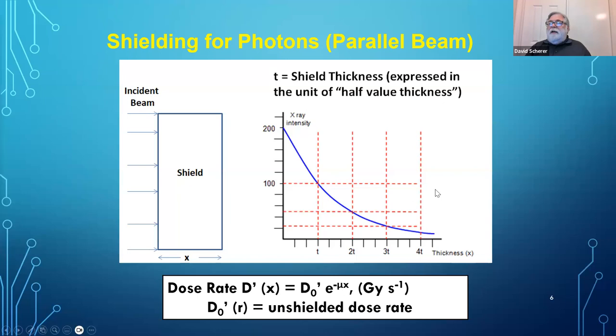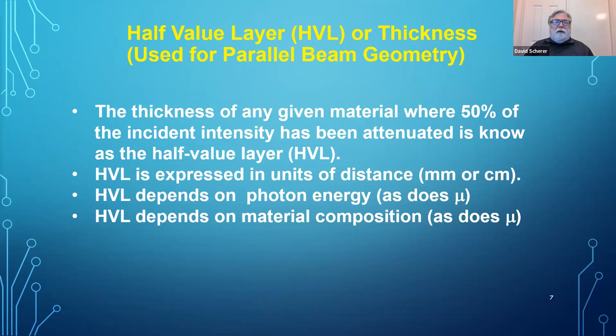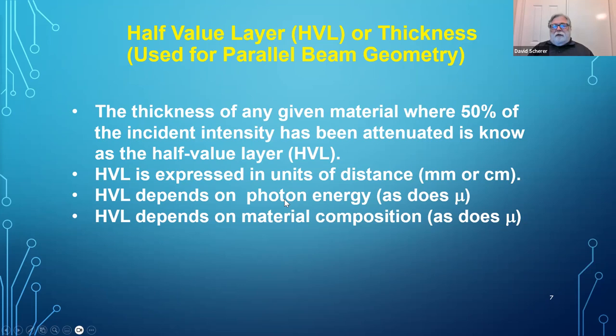There's another way to set up the problem. Instead of using the attenuation coefficient, it's very common to use the concept of the half value layer, or HVL — the amount of material that will reduce the beam by half. Just like the attenuation coefficient, the HVL depends on the energy of the photons and the material, and it's expressed in units of thickness: millimeters, centimeters, inches.